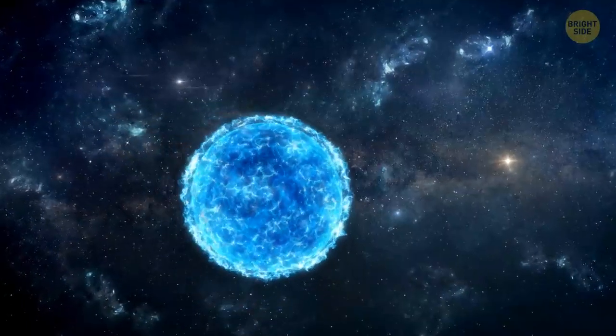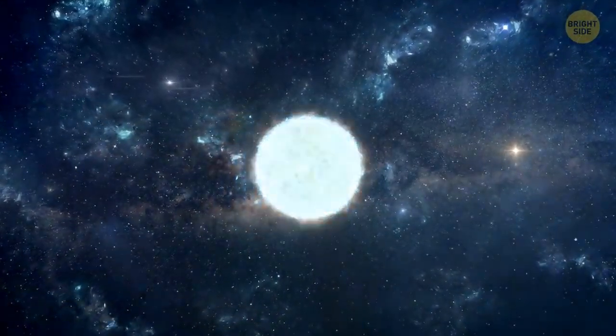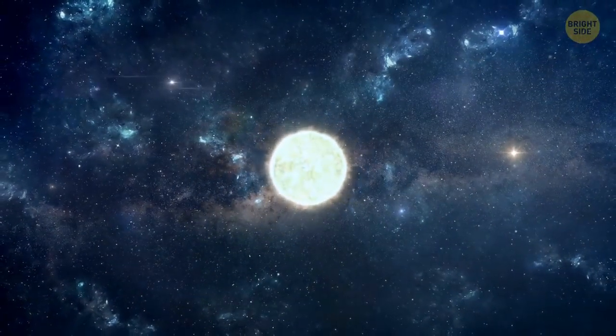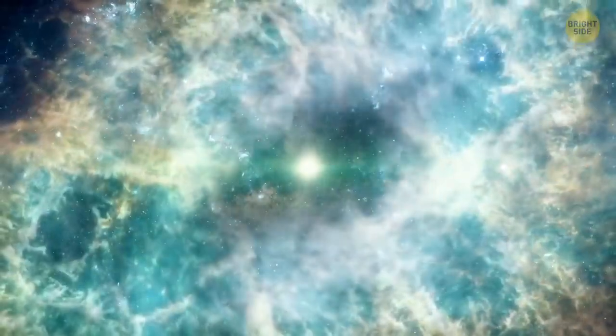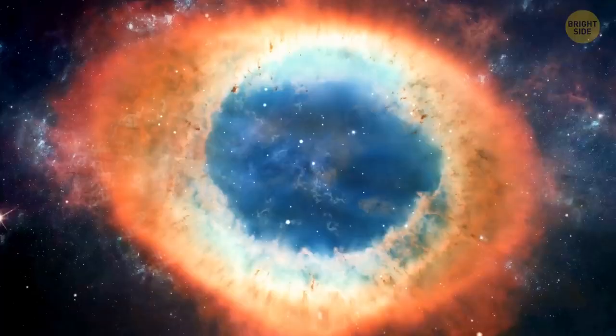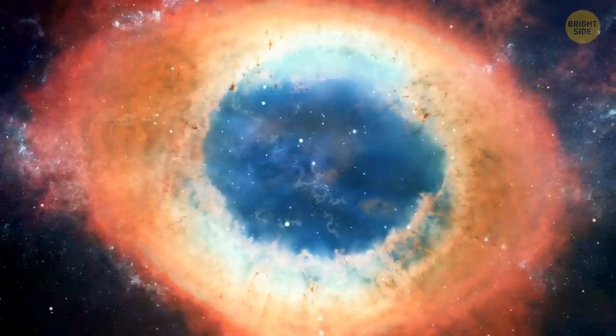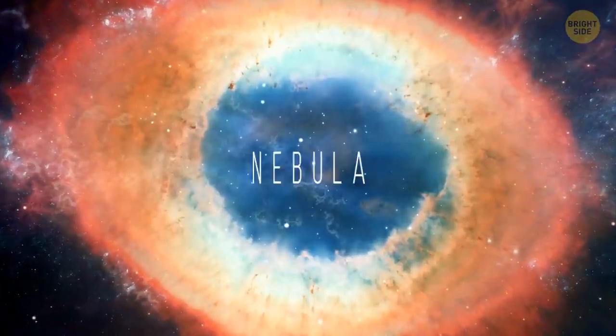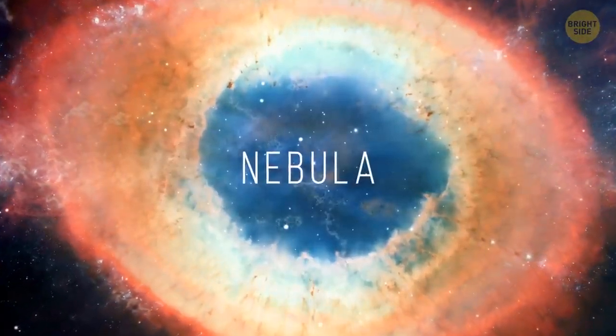It happens so fast that an enormous shockwave causes the outer part of the star to blow up. It produces a blinding burst of light. This powerful blast is called a supernova. What's left behind is an incredibly dense core with a huge cloud of hot gas called a nebula expanding around it.